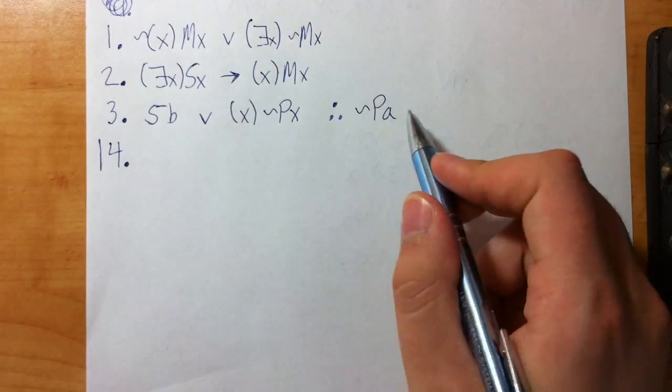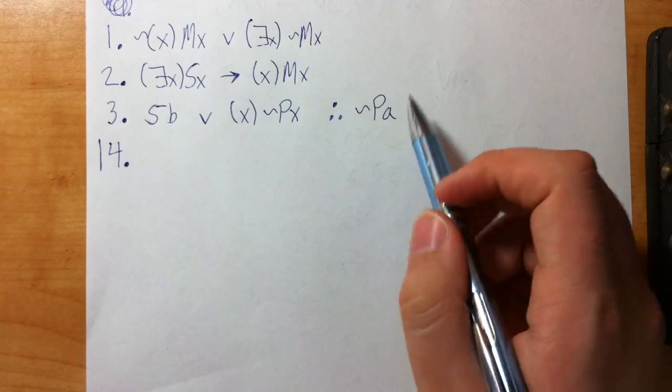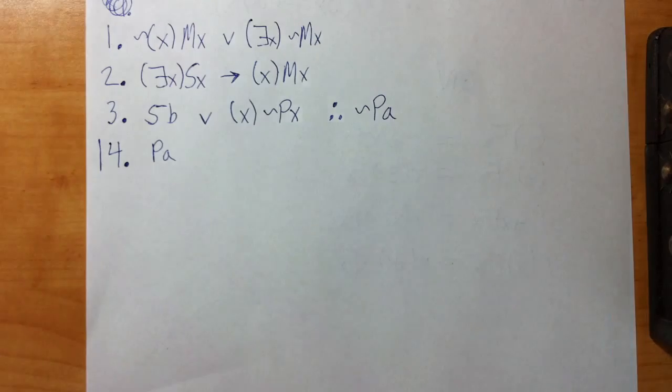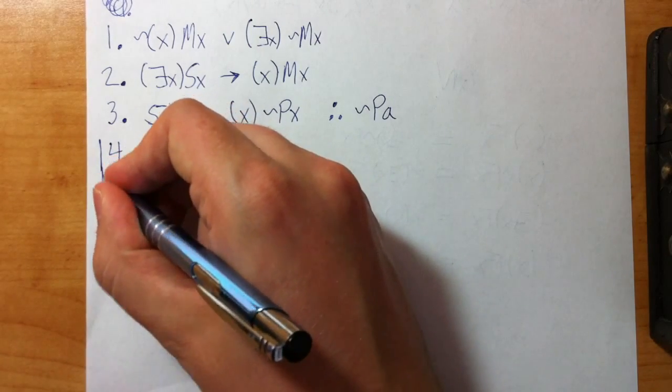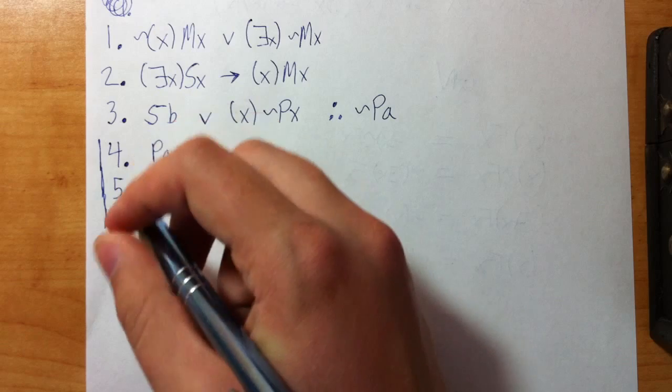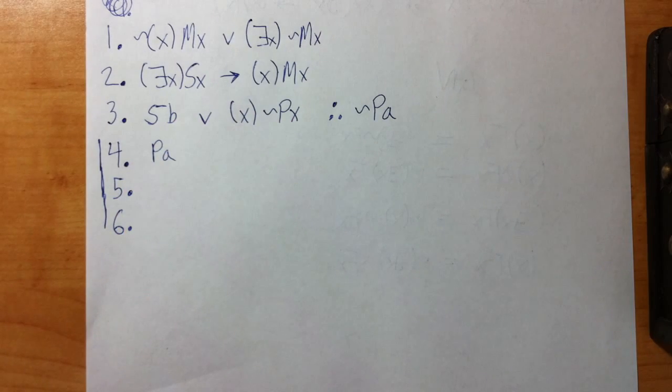So I assume, first step for RIA, step one for RIA, assume the opposite of what you want. So I want tilde PA, so I'm going to assume the opposite, PA. Step two for RIA says find a contradiction. So this is where the rubber meets the road, and I'm going to actually have to work my proof out. So I'm thinking, okay, I'm just going to work it out. I don't necessarily see how I'm going to get a contradiction, but I'm going to work it out. See what I can do. And hopefully a contradiction will naturally fall out.